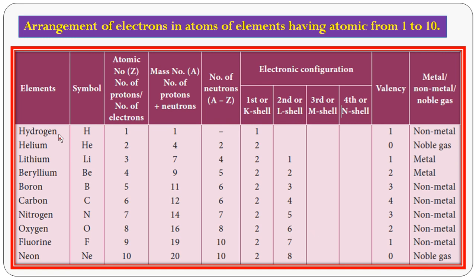These are some of the elements given with their symbols, atomic numbers, and mass numbers. From these you have to find the number of neutrons, write the electronic configuration from the atomic number, find the valence electrons and valence, and determine whether each element is a metal, non-metal, or noble gas. This is how you complete the tabulation.